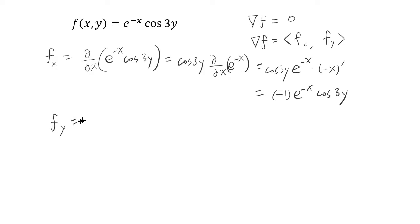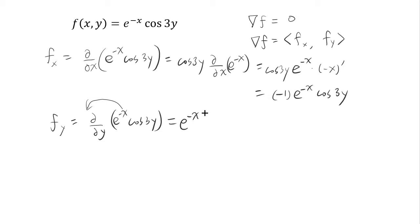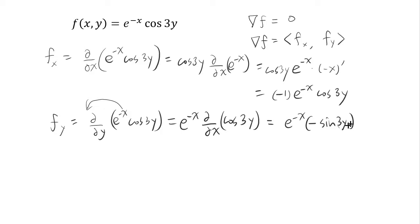What about f sub y? You're differentiating e^(−x) · cos(3y) with respect to y. This time you're treating y as the variable and x as a constant, so e^(−x) is treated as a constant and can be brought outside. Then you differentiate cosine(3y), which gives negative sine. The chain rule says the 3 from 3y must be brought outside, and differentiating 3y gives 3. So that gives you negative 3 · e^(−x) · sin(3y).